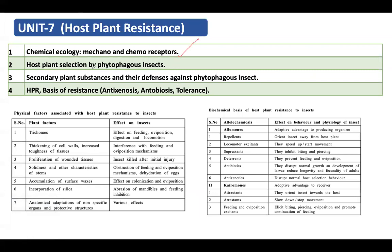Next is host plant selection by phytophagous insects. Host plant selection involves five stages, and you need to remember each step in sequential manner: host habitat finding, host finding, host recognition, host acceptance, and host suitability.